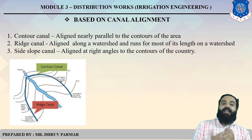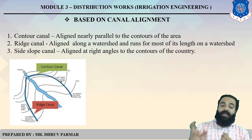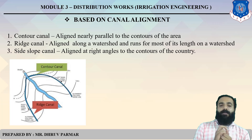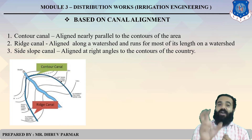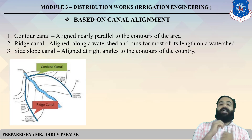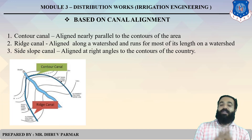Based on canal alignment, there are three types. A Contour Canal is aligned nearly parallel to the contours of the terrain. A Ridge Canal is aligned along a watershed or catchment area. A Side Slope Canal is aligned at right angles to the contours. So there are three types of canal based on canal alignment.